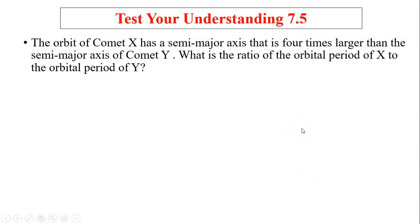Test your understanding 7.5. The orbit of comet X has a semi-major axis that is four times larger than the semi-major axis of comet Y. What is the ratio of orbital period of X to the orbital period of Y? We know orbital period is directly proportional to the semi-major axis to the power of 3 over 2. Since X is 4 times Y, 4 to the power of 3 over 2 is just 8. So the ratio equals 8.